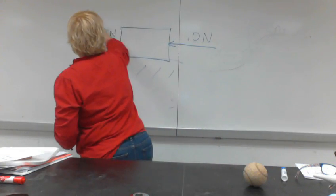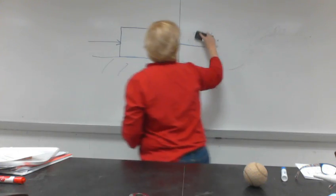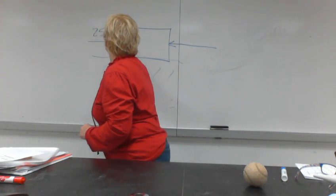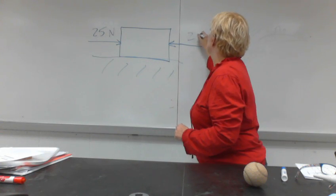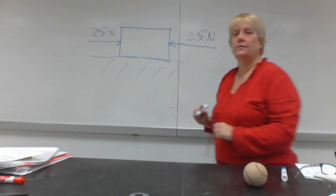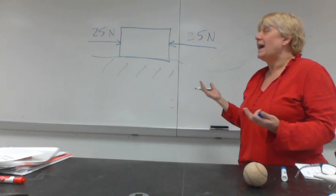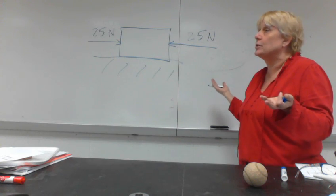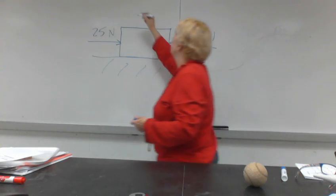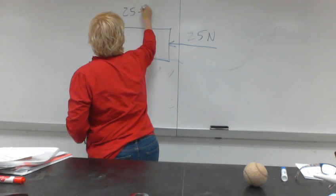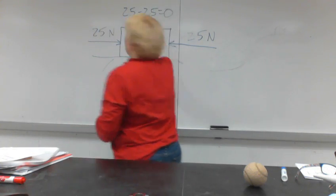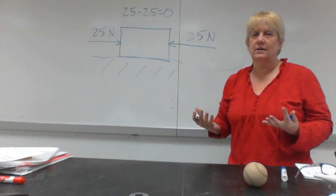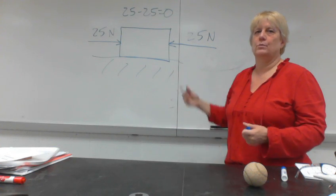What if we have a third situation where we push from this direction with 25 newtons, and from this direction with 25 newtons? We have equal force on either side of the box. 25 is equal to 25. So the net force acting on this box is zero. There is no net force. We say that this is balanced. The box is not going to move.